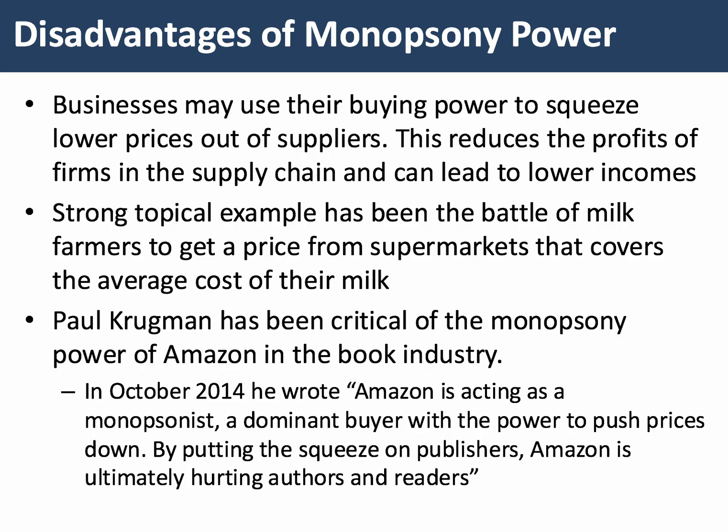There are of course some disadvantages of monopsony power, and we tend to focus on the businesses earlier in the supply chain and the consequences for them. A major topical example is the battle of the milk farmers trying to negotiate a price from the supermarkets or big milk processing businesses that actually covers the average cost of each pint or litre of milk they supply. The American economist Paul Krugman has been highly critical of Amazon - in October 2014 he stated: 'Amazon is acting as a monopsonist, a dominant buyer with the power to push prices down. By putting the squeeze on publishers, Amazon is ultimately hurting authors and readers.'